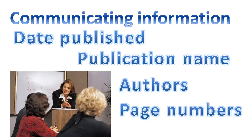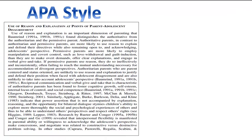When all of the researchers are communicating in the same way, it is easier for them to understand each other. When using APA style, for example, authors make reference to a researcher's last name and the year his article was published. Sometimes the author will use the researcher's name in the sentence and then put the year in parentheses.